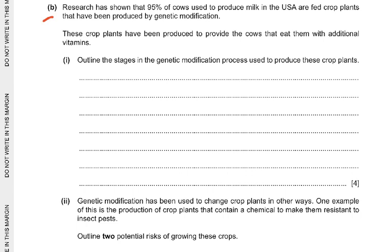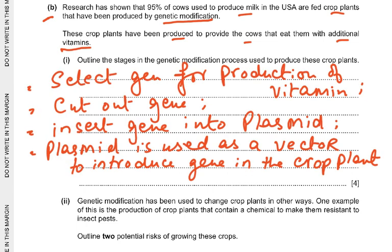Research has shown that 95 percent of cows used to produce milk in the USA are fed crop plants that have been produced by genetic modification. These crop plants have been produced to provide the cows with additional vitamins. Outline the stages in the genetic modification process: select the gene for the production of vitamins, cut out the gene using a restriction enzyme, insert the gene into a plasmid, use the plasmid as a vector to introduce the gene into the crop plant, and the bacteria carrying the plasmid transfer that gene into the crop plant.